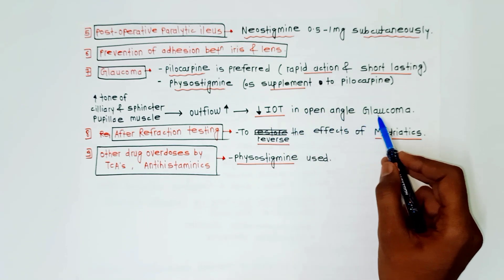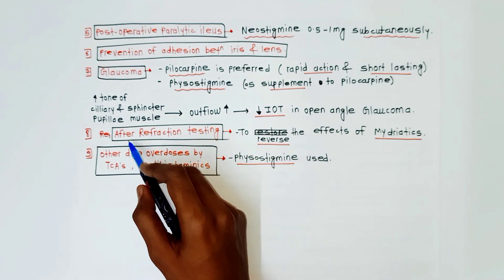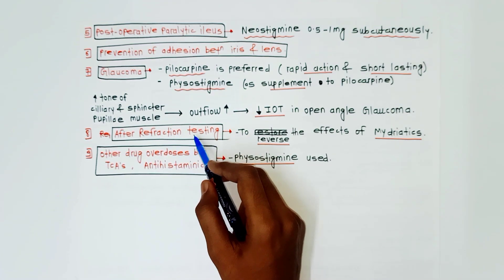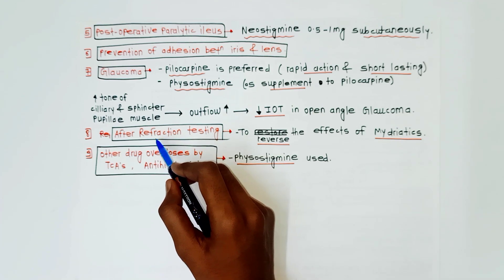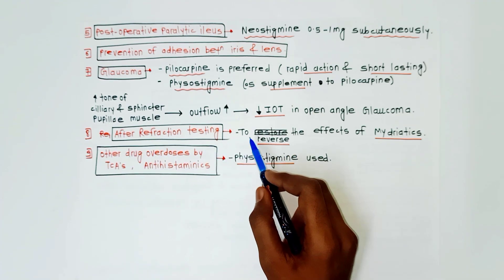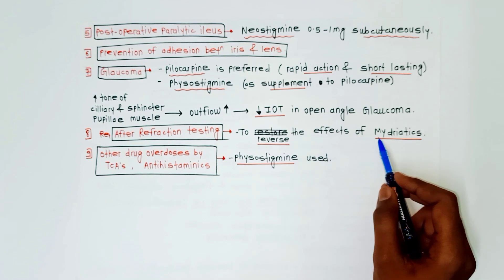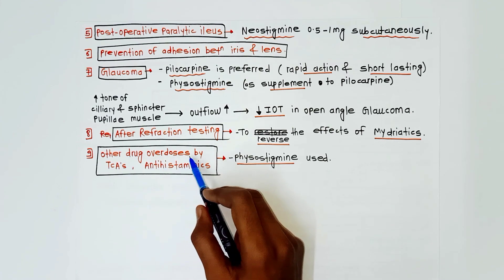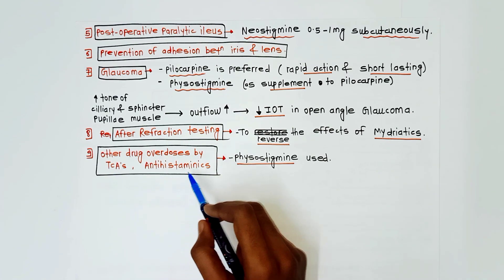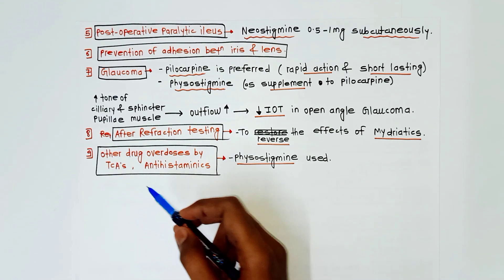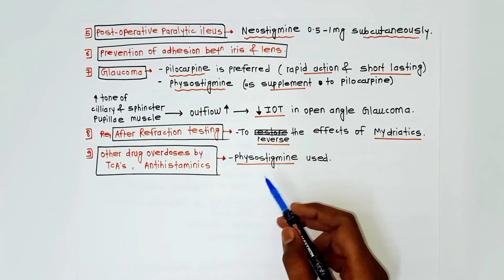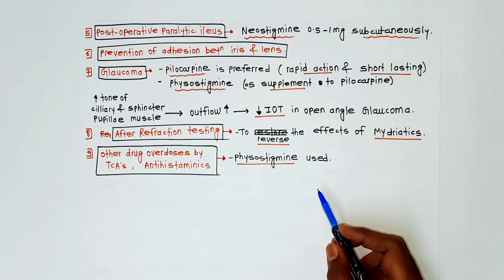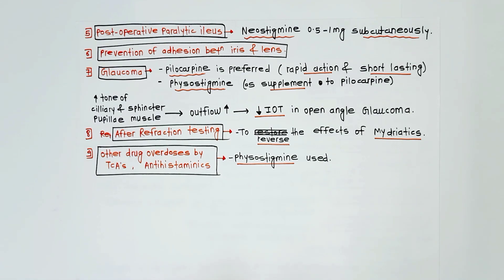After refraction testing — not during refraction testing — anticholinesterases are used to reverse the effects of mydriatics like atropine. The last use is for other drug overdoses, such as by TCAs (tricyclic antidepressants) and antihistamines, in which physostigmine is used.